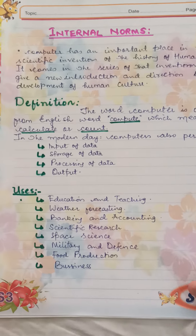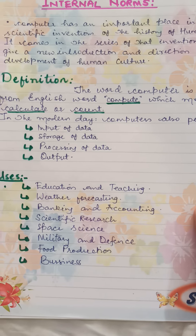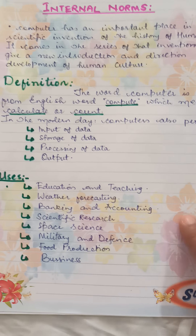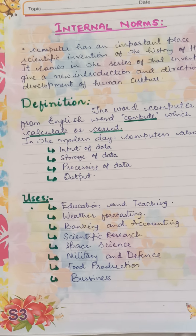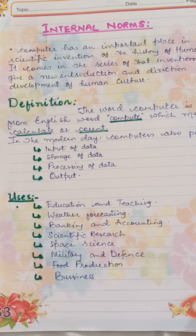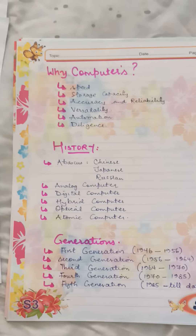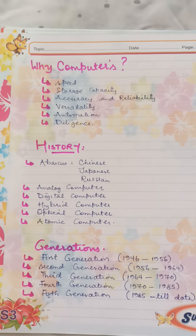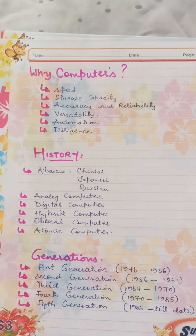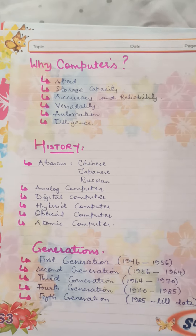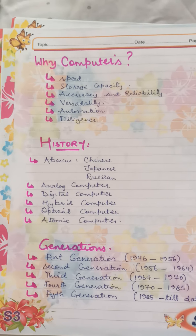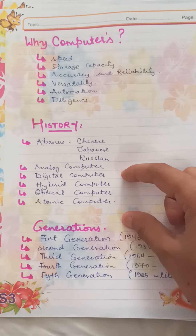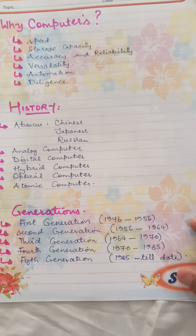Where are computers used nowadays? They are used in education and teaching, weather forecasting, banking and accounting, scientific research, space science, military and defense, food production, companies and business. Then the characteristics of computers that make them so widely used. We have the history of computers — it first started with an Abacus, which is a calculating device, and moved further through developments. We are currently in the fifth generation.